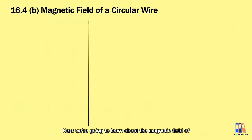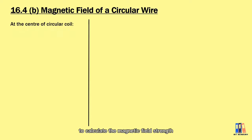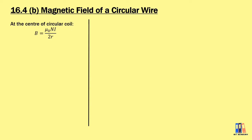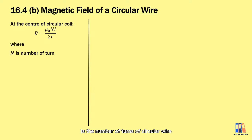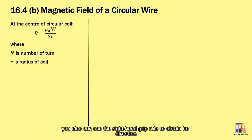Next, we are going to learn about the magnetic field of a circular wire, and we do not need to worry about the derivations. We are given the formula to calculate the magnetic field strength at the center of a circular coil: B = μ₀nI / (2r), where n is the number of turns and r is the radius of the coil. For the direction of the magnetic field, you can also use the right-hand grip rule to obtain it.